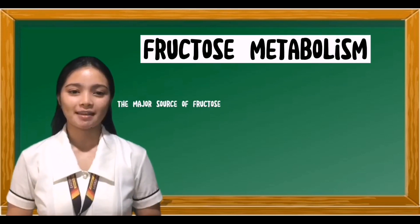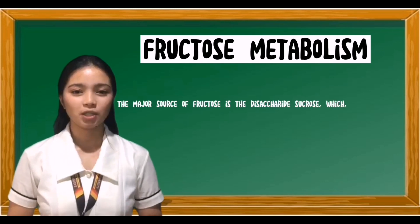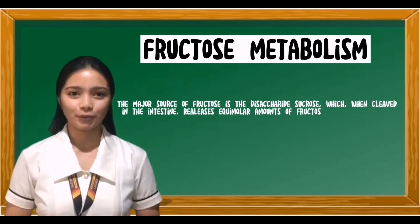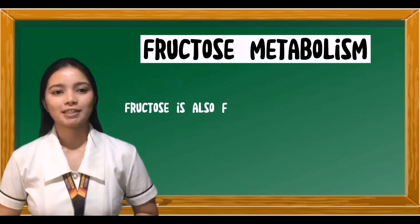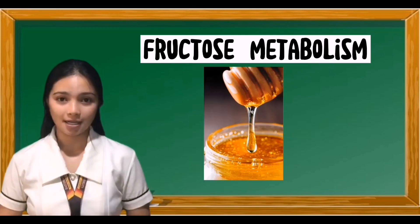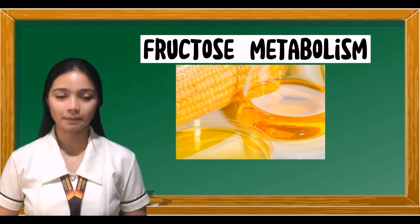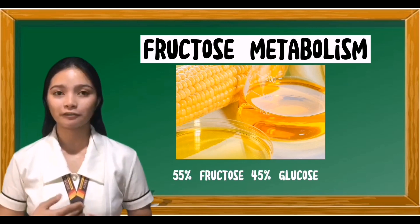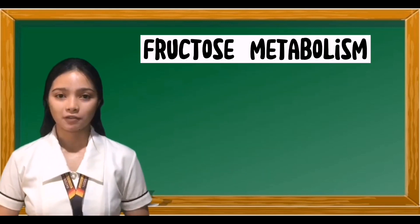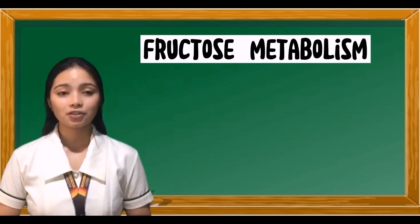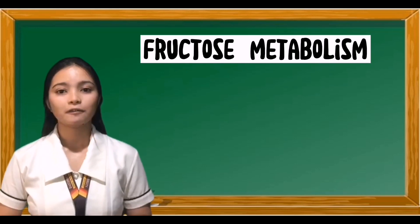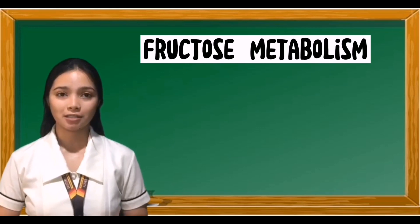The major source of fructose is the disaccharide sucrose, which when cleaved in the intestine releases similar amounts of fructose and glucose. Fructose is also found as a free monosaccharide in many fruits, in honey, and in high-fructose corn syrup, in which 55% fructose or 45% glucose is used to sweeten soft drinks and many foods. Entry of fructose into cells is not insulin-dependent, and in contrast to glucose, fructose does not promote the secretion of insulin.